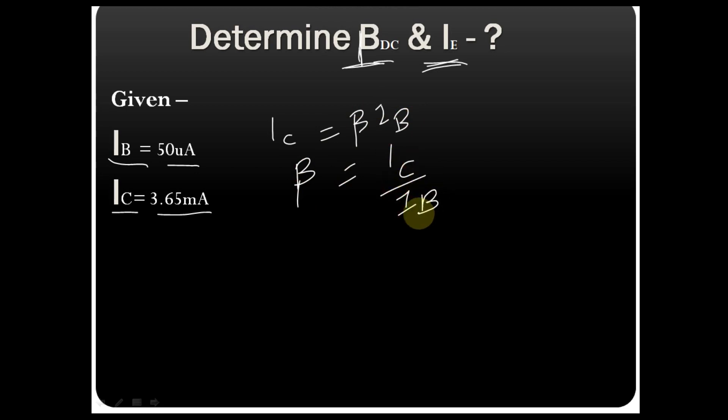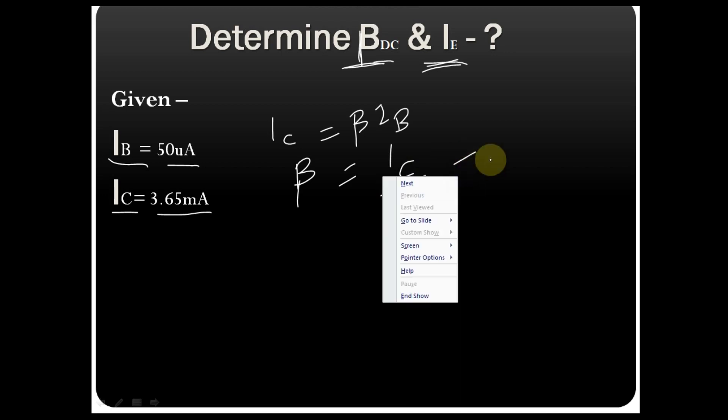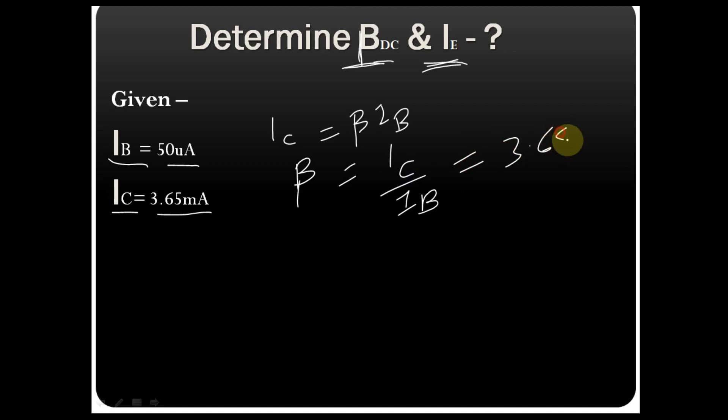You have the value of IC that is 3.65 milliampere divided by 50 microampere. If you solve this, you will find beta equals 73. Beta DC is basically DC current gain of a transistor.